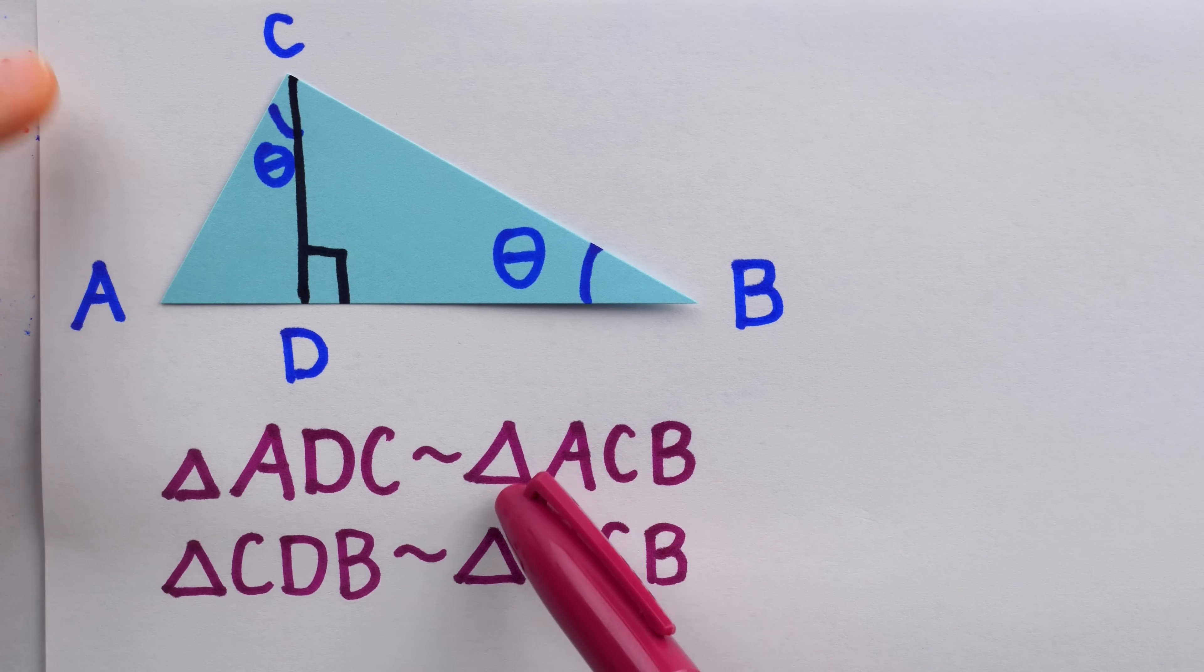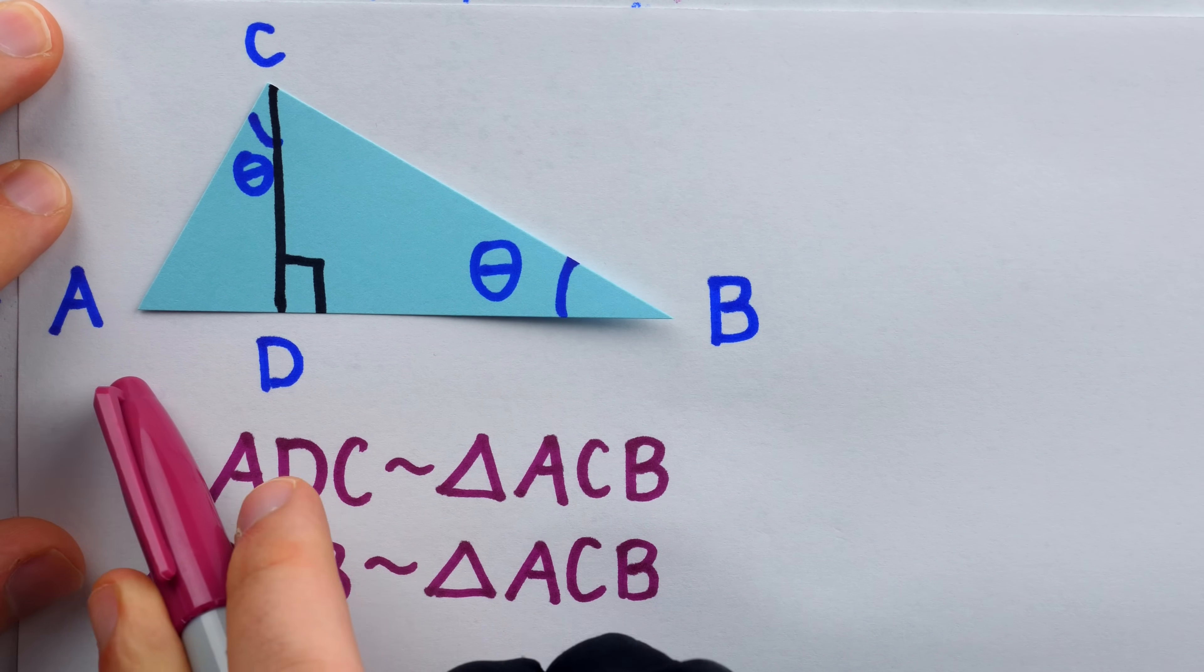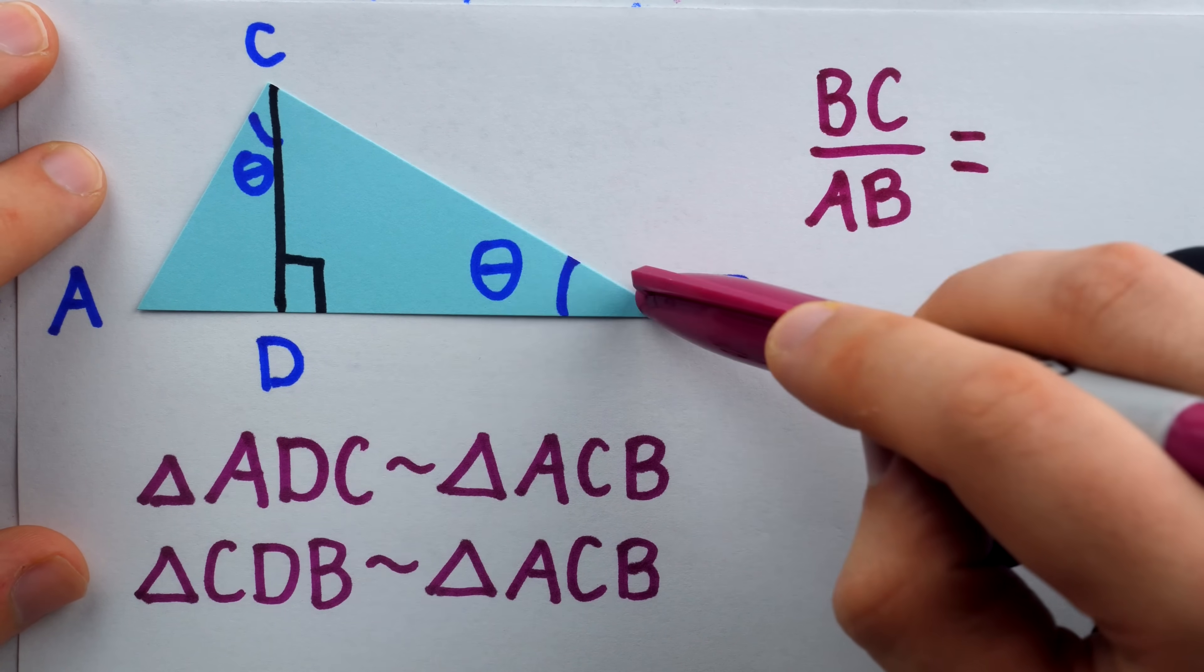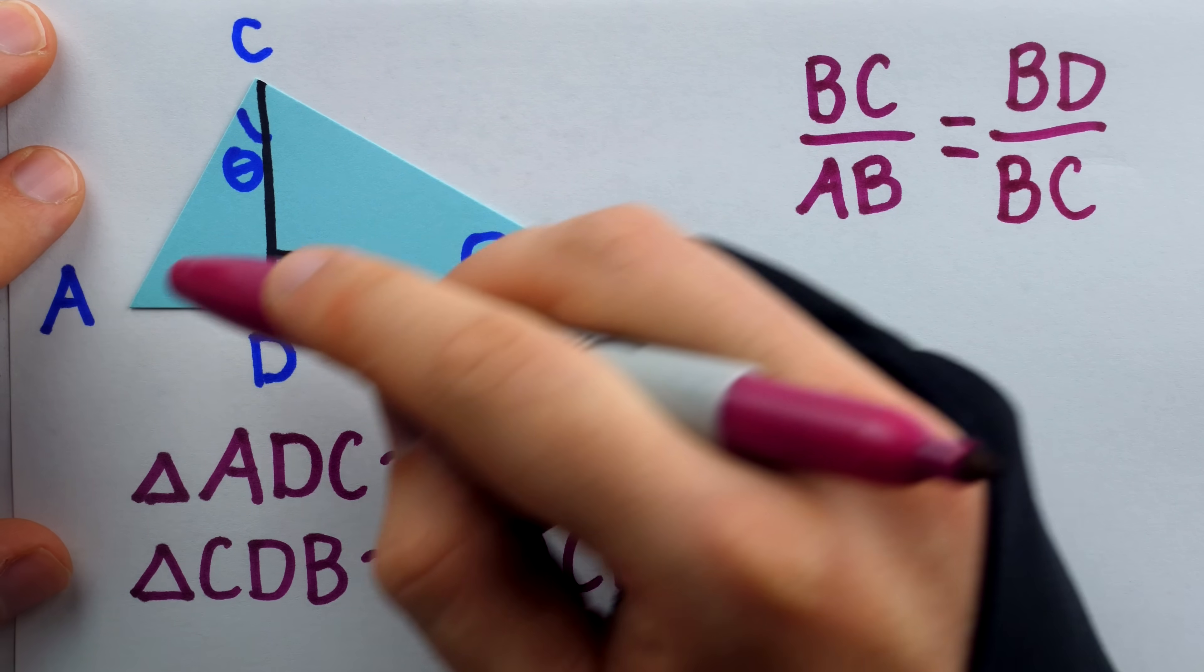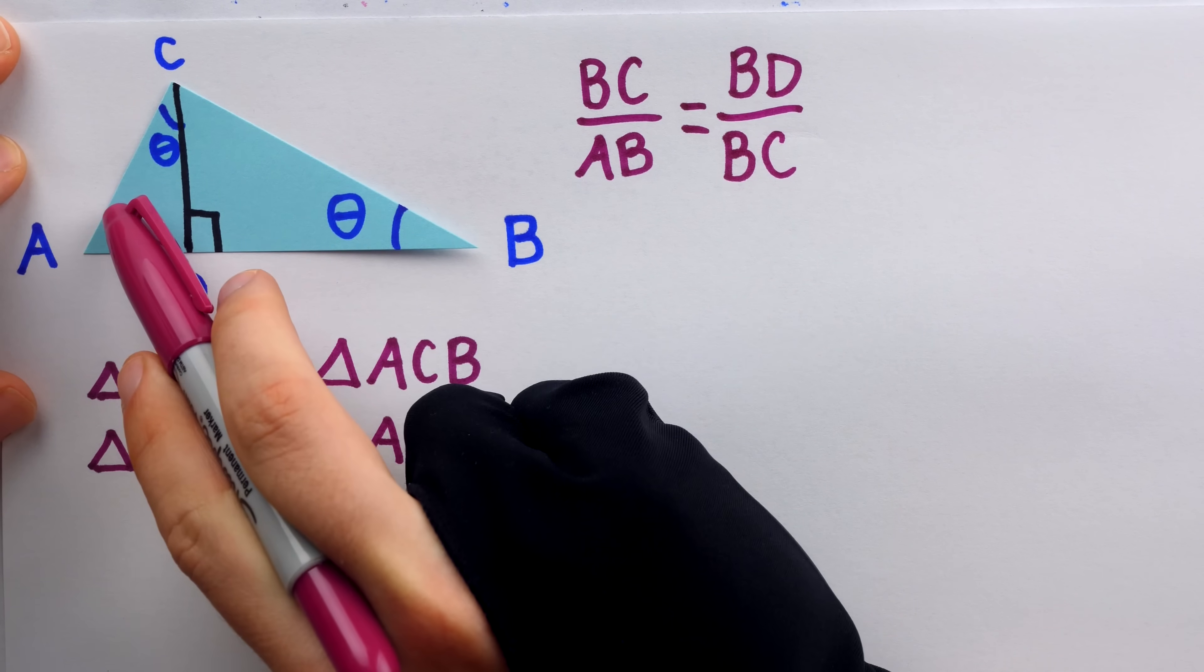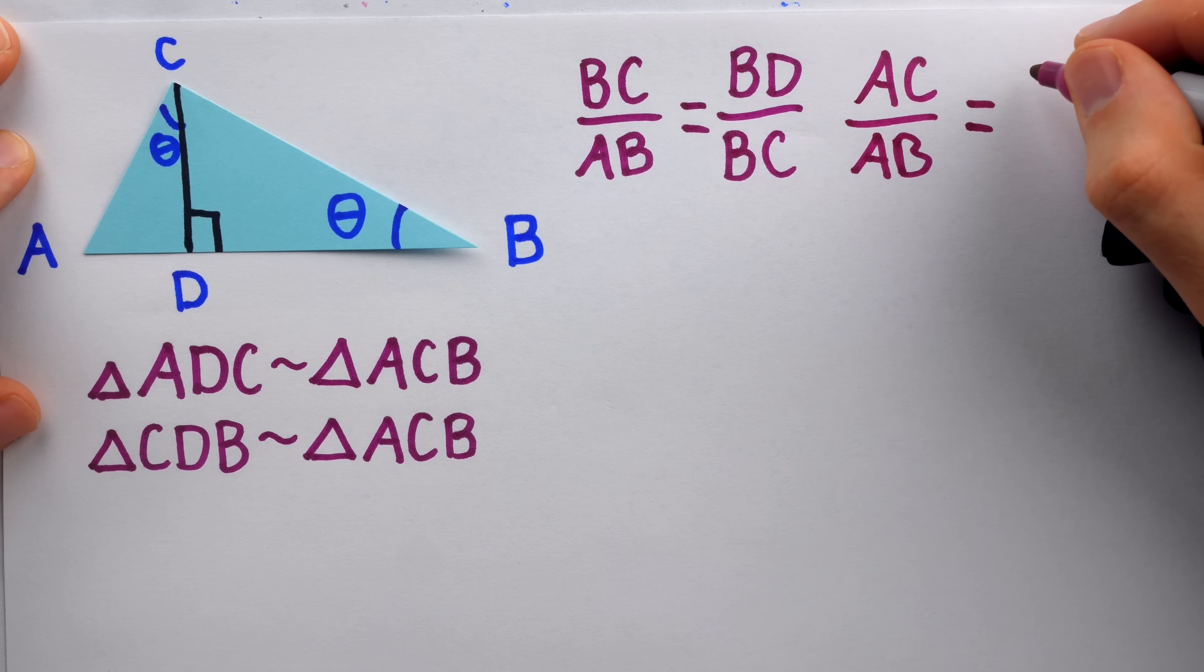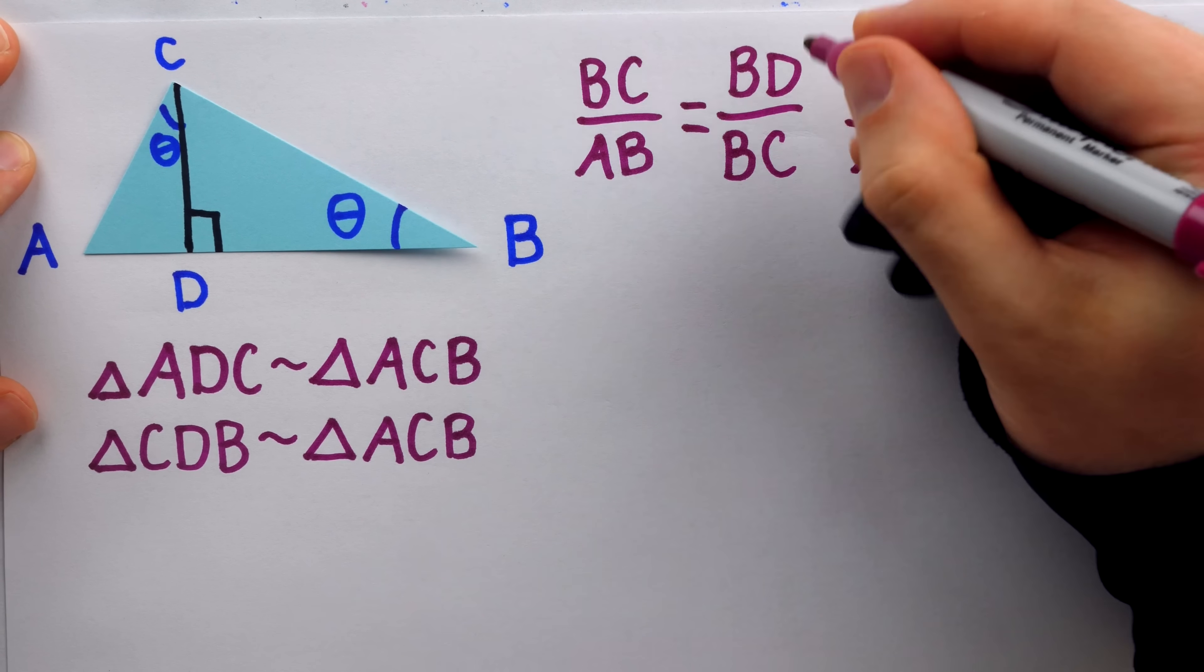Now, having established these similarities, we get some very useful proportions. Indeed, in the big triangle, the long side, BC, to the hypotenuse, AB, must be the same as that corresponding ratio in this right triangle, the long leg, BD, to its hypotenuse, which is BC. Sorry for that horrible fraction bar. Again, this is set up by comparing this triangle to the big one. And we create a similar proportion by looking at the ratio of the small leg to the hypotenuse. That's AC to AB. And now, if we focus our attention on the small right triangle, look at the small leg to the hypotenuse. That's a ratio of AD to AC, which, of course, must be the same as this ratio, because the triangles are similar.